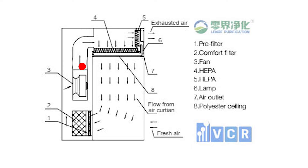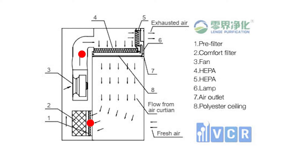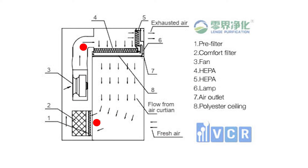The HEPA-filtered air is distributed in unidirectional form into the working zone. The downflow of air carries the dust generated during powder processing into a pre-filter. After pre-filtering, the air goes through a fine filter and is typically recirculated. Ten percent of HEPA filtered air is bled out of the booth through the air outlet to maintain the working zone under negative pressure, minimizing airborne contamination breakout.